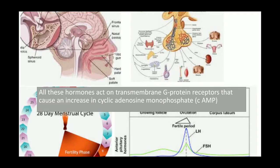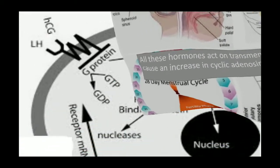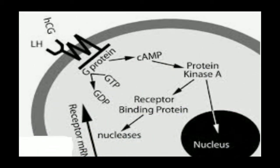All these hormones act on transmembrane G-protein receptors, causing an increase in cyclic adenosine monophosphate (cAMP). At the level of the cell membrane, at the specific target cell, there is a G-protein. Whether it is hCG, LH, TSH, or FSH, they all act on the G-protein which in turn causes activation of cAMP.